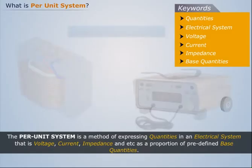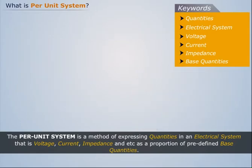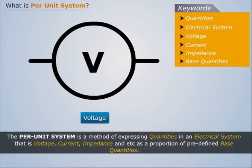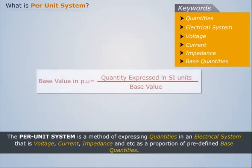Also, per unit system is mainly used for transformers and AC machines. For a given quantity like voltage, current, power, impedance, torque, etc., the per unit value is the value related to a base quantity.